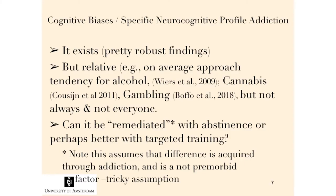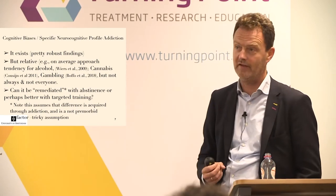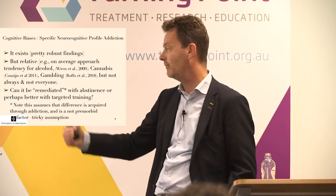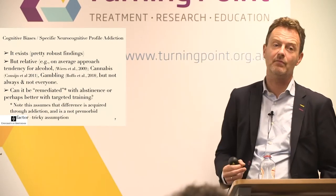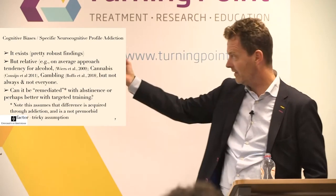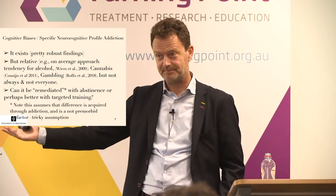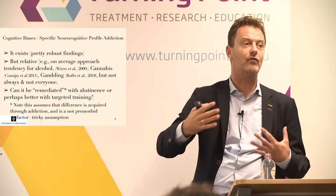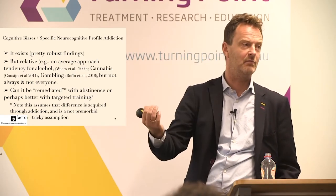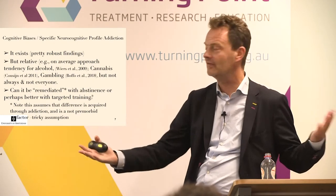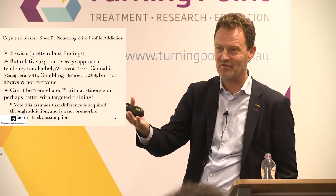Cognitive biases and the neurocognitive profile clearly exist — there are differences between people who suffer from addictions and others. However, keep in mind that they're relative. For example, the approach bias we find on average for people who smoke, who smoke cannabis, who use lots of alcohol, and in a recent study also for gambling materials — it's a very general thing in addictive behaviors — but you don't find it in everyone, and clearly not on every trial. It's really an average tendency.